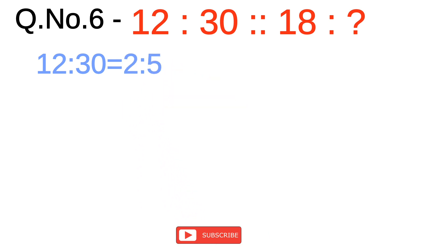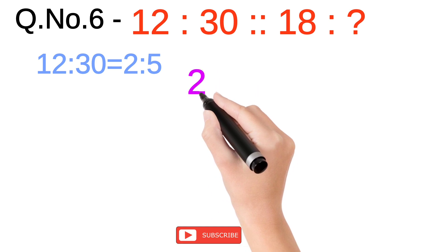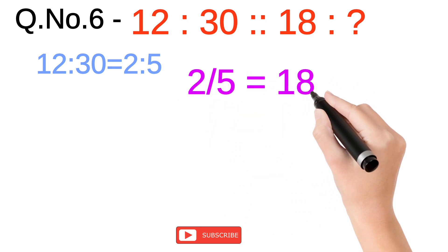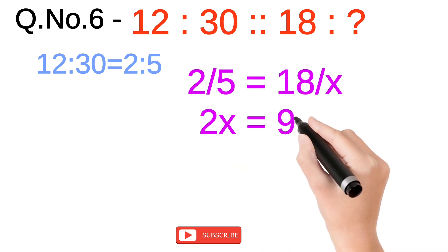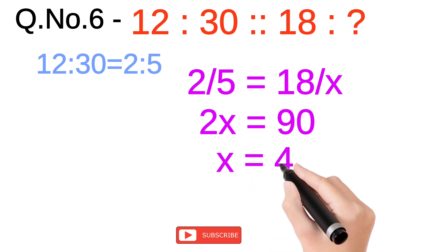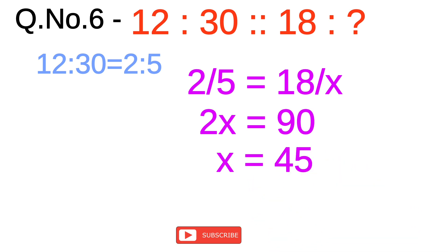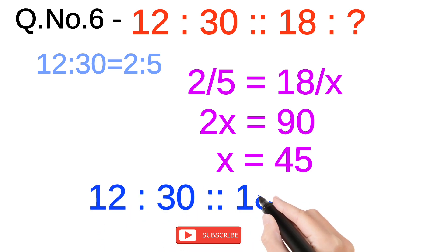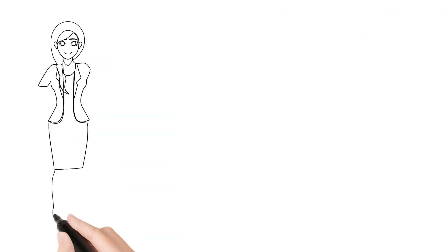In this number analogy, the first pair of numbers 12 and 30 has a ratio of 2:5. To find the missing number in the second pair, we need to determine what number has the same ratio to 18 as 2 has to 5. Setting up the proportion: 2/5 = 18/x, so 2x = 90, therefore x = 45.